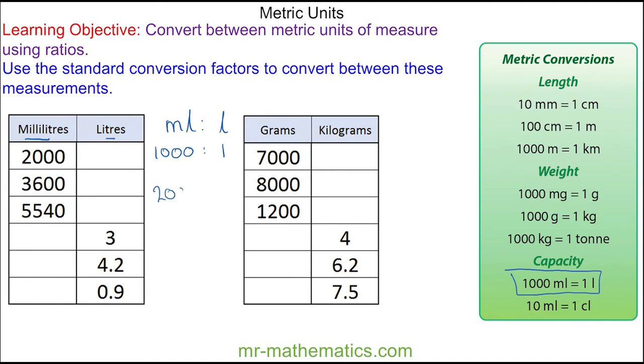So 2,000 millilitres, we'll multiply both sides by 2. So we have 2 litres. And for 3 litres, we'll multiply both sides by 3. So we have 3,000 millilitres.